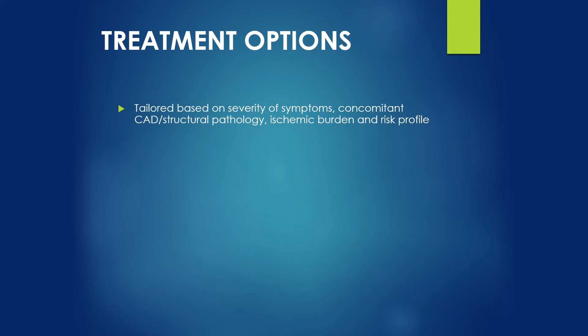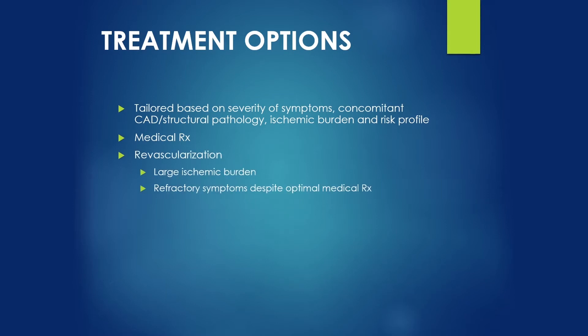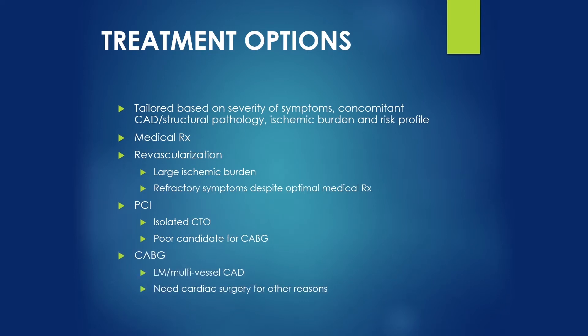Treatment options need to be tailored based on severity of symptoms, other coronary artery disease, structural pathology, ischemic burden, and risk profile. Medical therapy is certainly an acceptable treatment option. If, however, medical therapy is inadequate or insufficient, revascularization needs to be considered, weighing the size of ischemic burden and the symptoms associated with ischemia. PCI can be offered for isolated CTO or patients who are poor candidates for coronary artery bypass grafting. CABG can be considered for patients with left main or multivessel coronary artery disease or in need of cardiac surgery for other reasons.